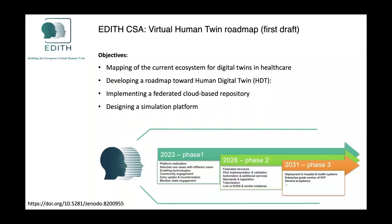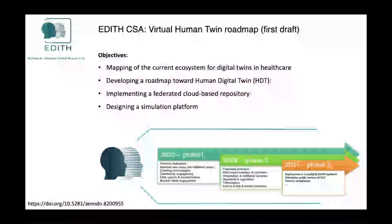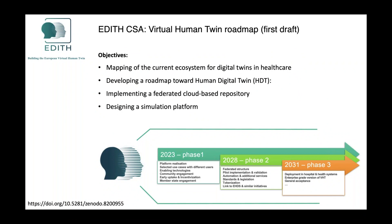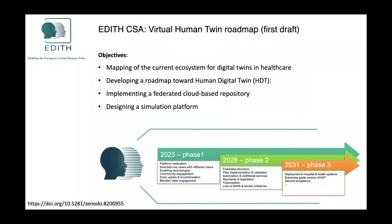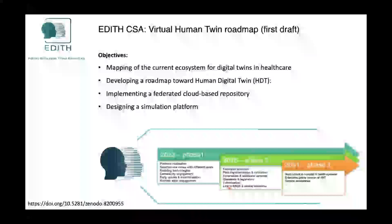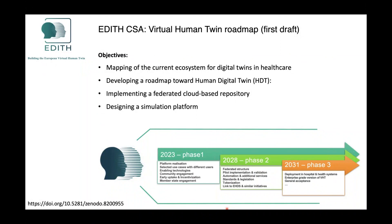Looking at the horizon for digital twins: the Virtual Physiological Human Institute is running the EDITH coordination and support action, with four objectives — mapping the ecosystem of digital twins available in Europe, developing a roadmap, influencing policy makers to support digital twin development, and implementing a federated cloud-based repository of digital twins and designing a platform for the world community. It's an ambitious two-year process with three phases. You'll find the roadmap at the provided link, which is an interesting summary of the current state of the art for digital twins in Europe.